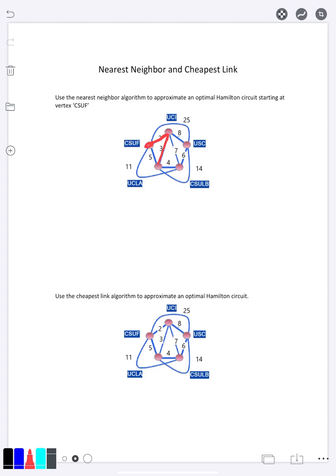So that's the next path I'm going to travel. After this, I'm at UCLA and I see 5, 3, 4, and 14. The 3 would be shortest, but again, that would be going back. We can't use that. Four is next, so we're going to use that.